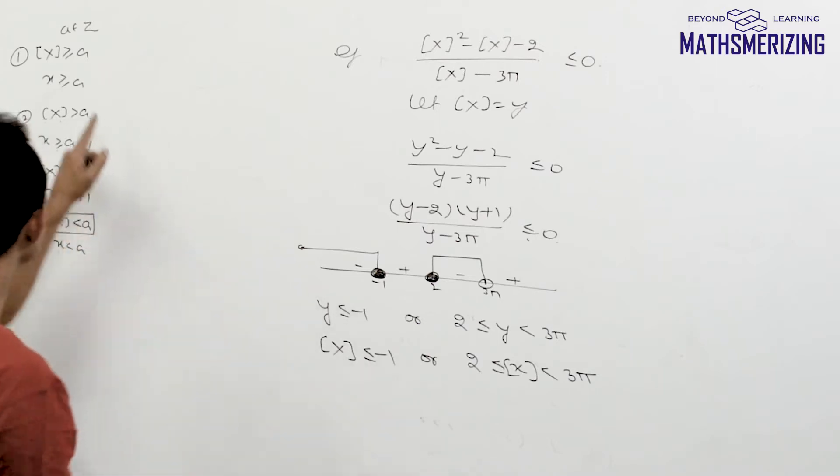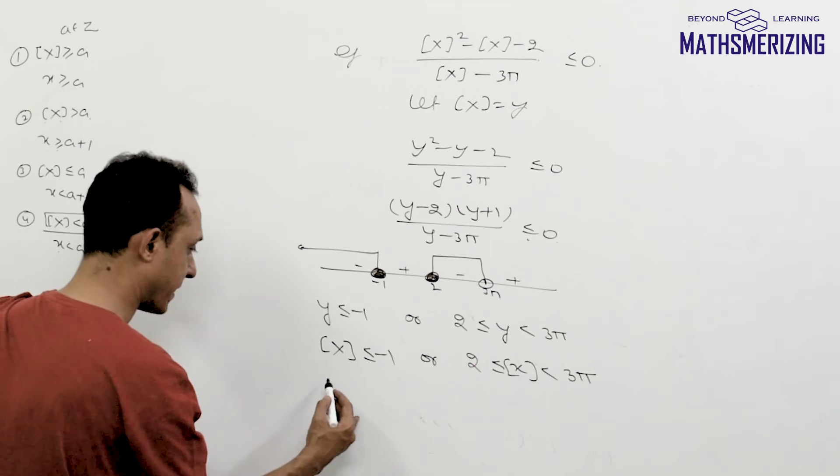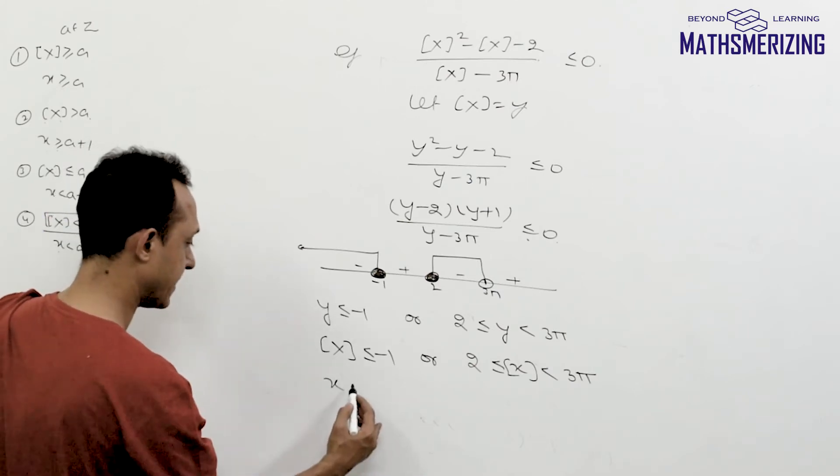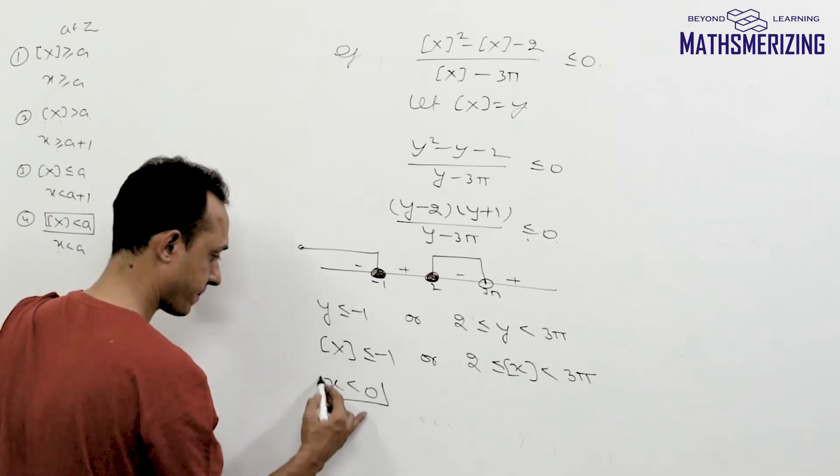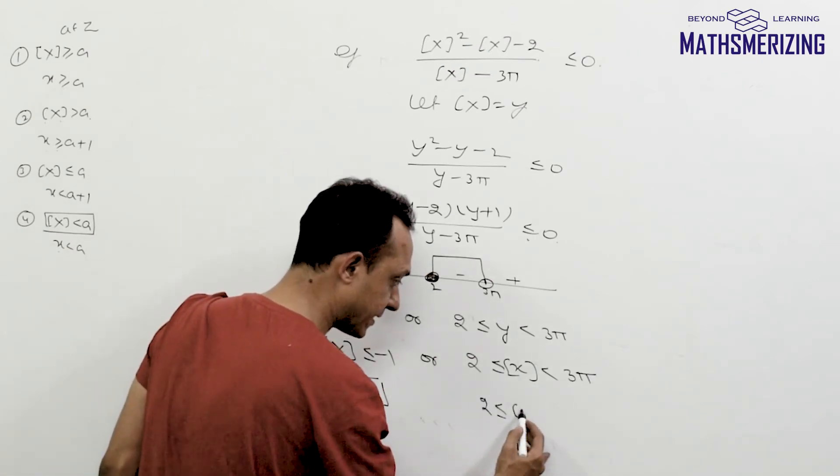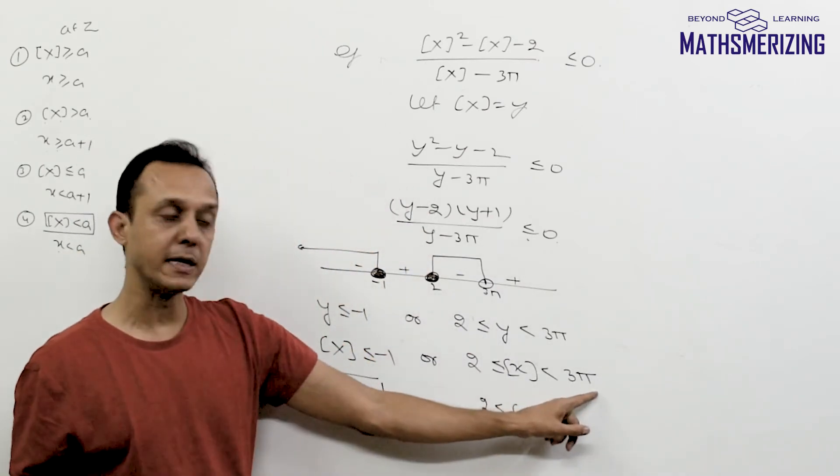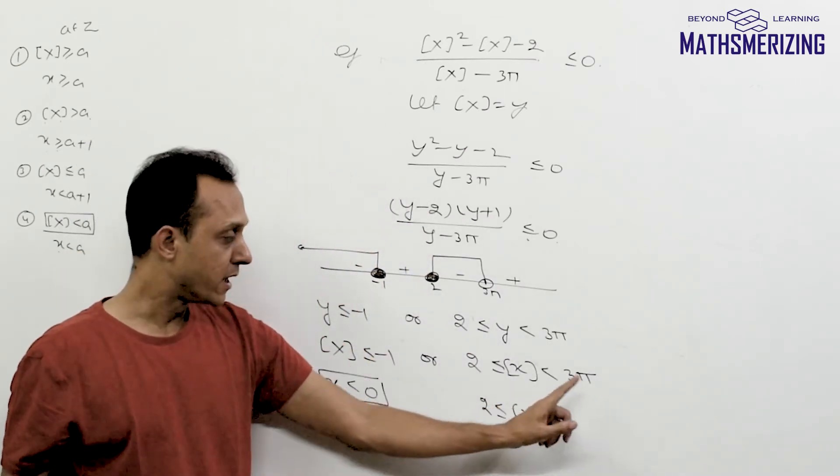Now greatest integer function of x less than a simply means x is less than a plus 1. So from here I can say x is less than 0, and from here the value of greatest integer function of x will lie between 2 and 3π.